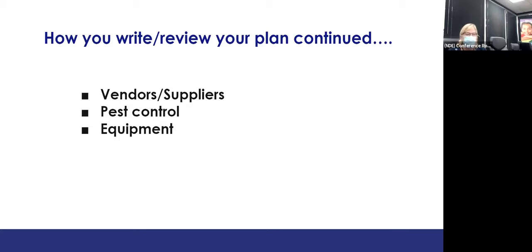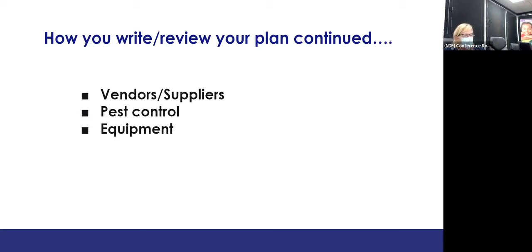Equipment — list what type of equipment you have; it will vary by facility. Some finishing or service-only sites will have a hot box and a refrigerator. A complex kitchen may have proofers, combis, convection ovens, regular ovens, burners, reach-in coolers, walk-in coolers, walk-in freezers, buffalo choppers, or specialty food processing equipment.